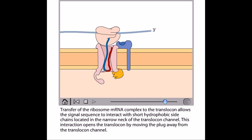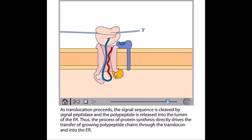This interaction opens the translocon by moving the plug away from the translocon channel. As translocation proceeds, the signal sequence is cleaved by the signal peptidase and the polypeptide is released into the lumen of ER. Thus the process of protein synthesis directly drives the transfer of growing polypeptide chains through the translocon and into the ER.